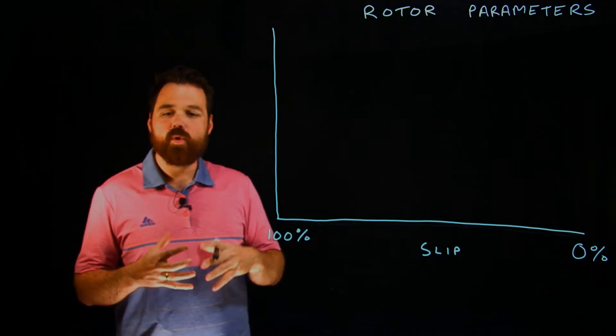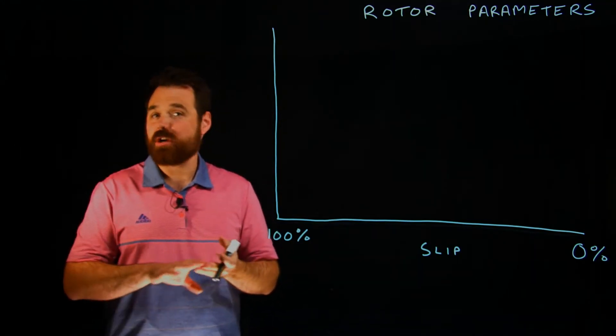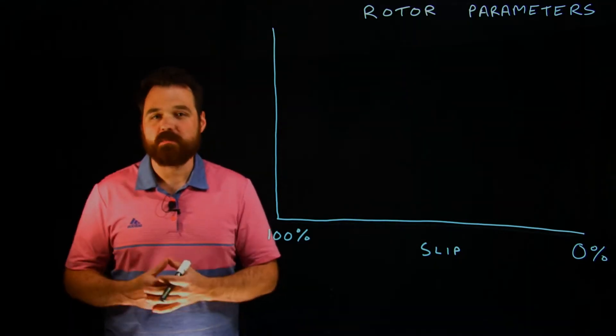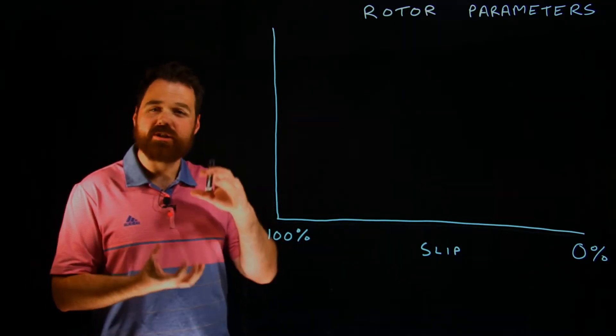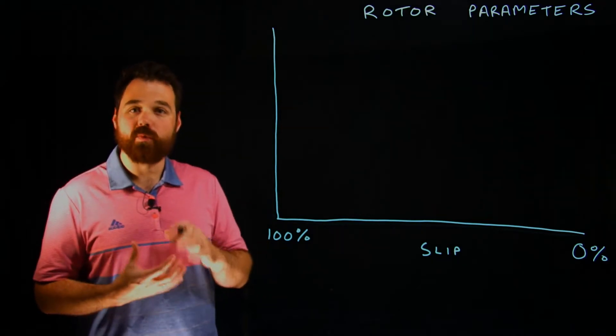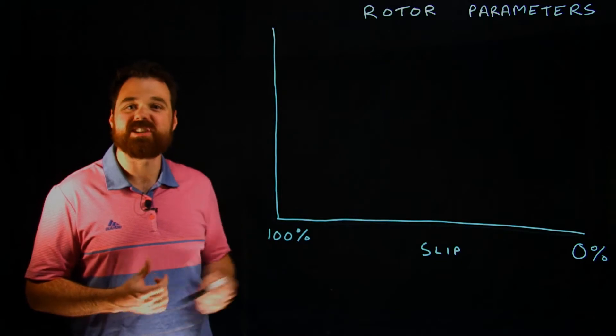So we're talking about what is actually happening inside the rotor of a squirrel cage induction motor, three-phase motor. We're talking about voltage and current and things that are actually getting induced into that rotor from that spinning rotating magnetic field in the stator.